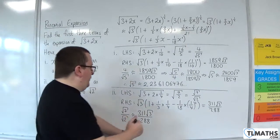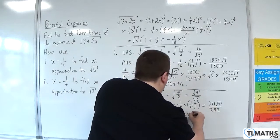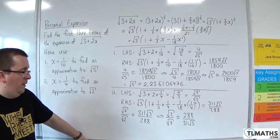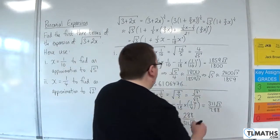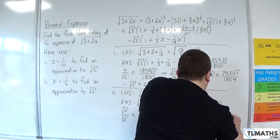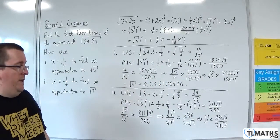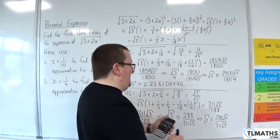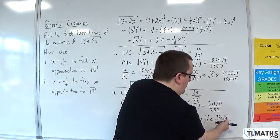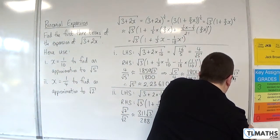So we now know that root 7 over root 2 is approximately 311 root 3 over 288. In a similar way, I'm going to take the reciprocal of both sides: root 2 over root 7 is approximately 288 over 311 root 3. Then I multiply both sides by root 7, giving root 2 approximately equal to 288 root 7 over 311 root 3. Multiplying top and bottom by root 3, and dividing 288 by 3 gives 96, so root 2 is approximately 96 root 21 over 311.